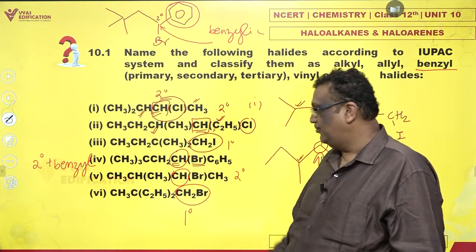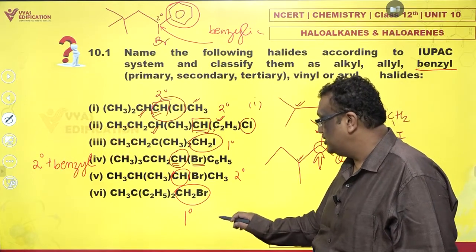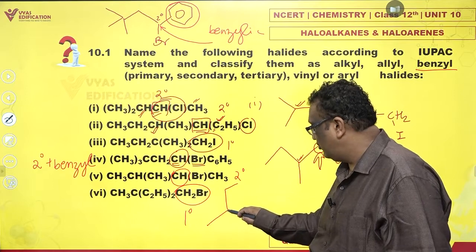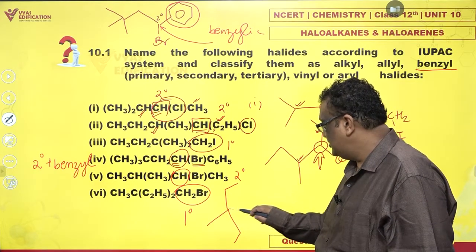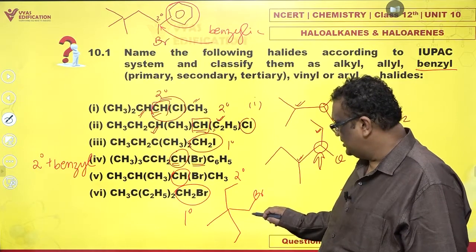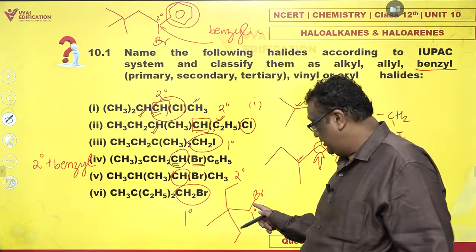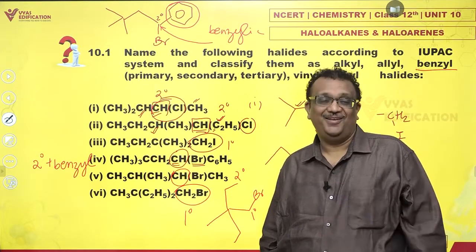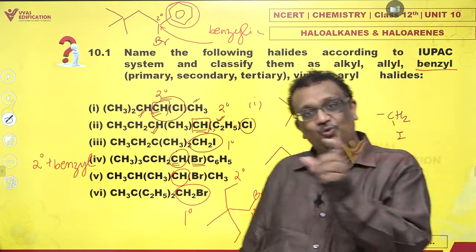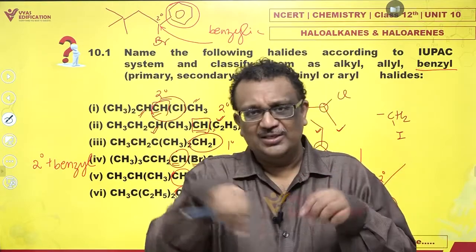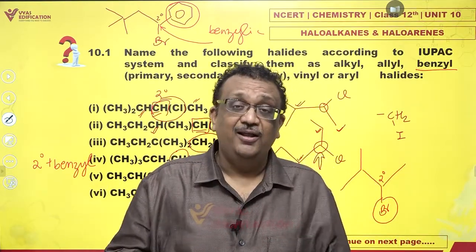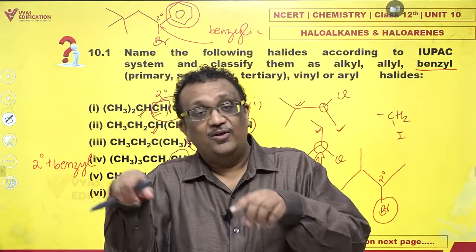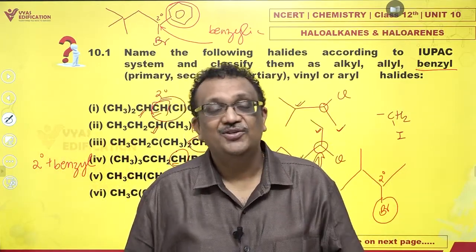CH2Br is the classical primary. Drawing the bond line notation: (C2H5)2C(CH3)-CH2-Br. This carbon is primary because it is attached to only one more carbon atom. So the rule is: if you have CH2X, it is primary; if you have CHX (with something on either side), it is secondary; and if there is no hydrogen attached to that carbon — only one halogen and alkyl groups — then it is tertiary.